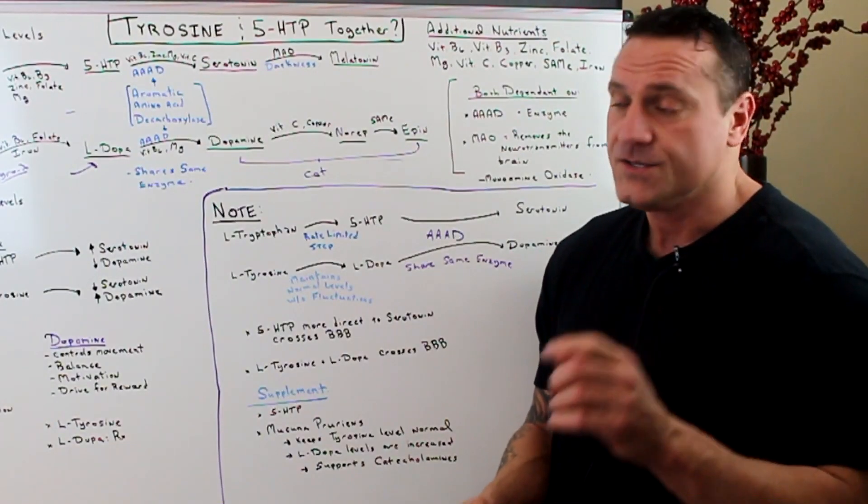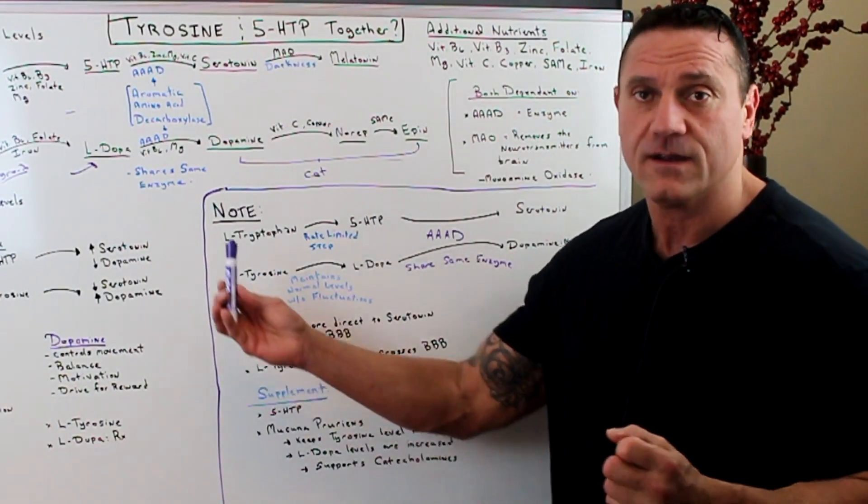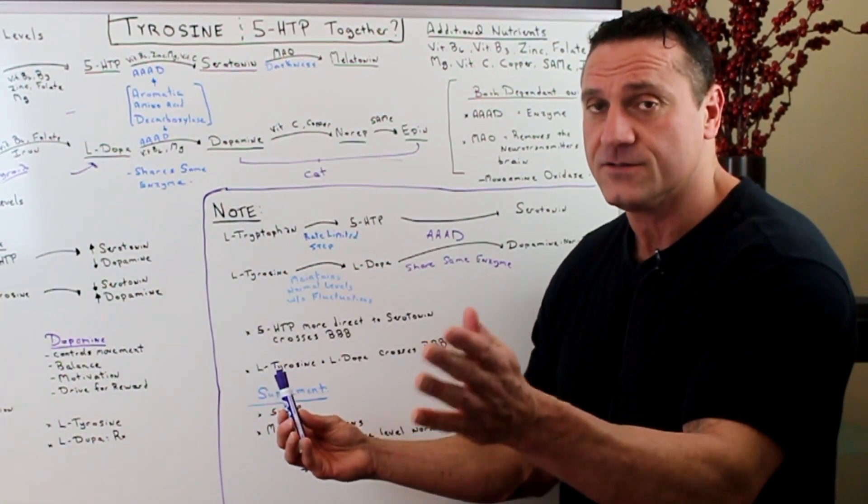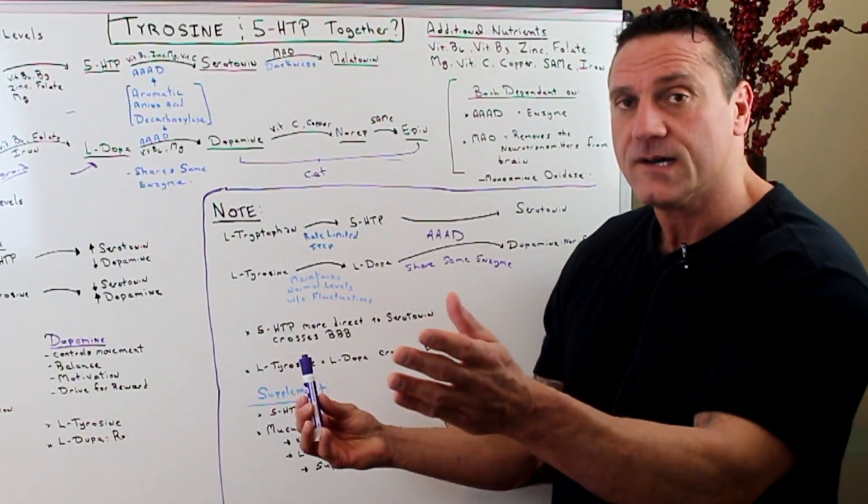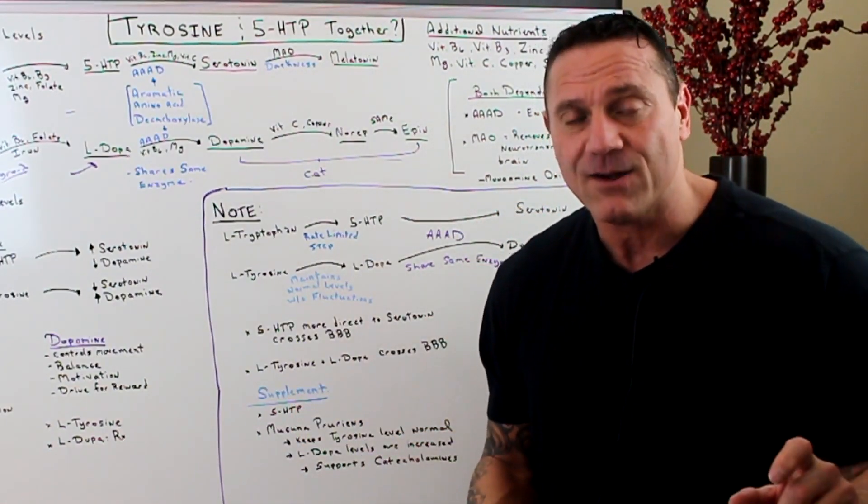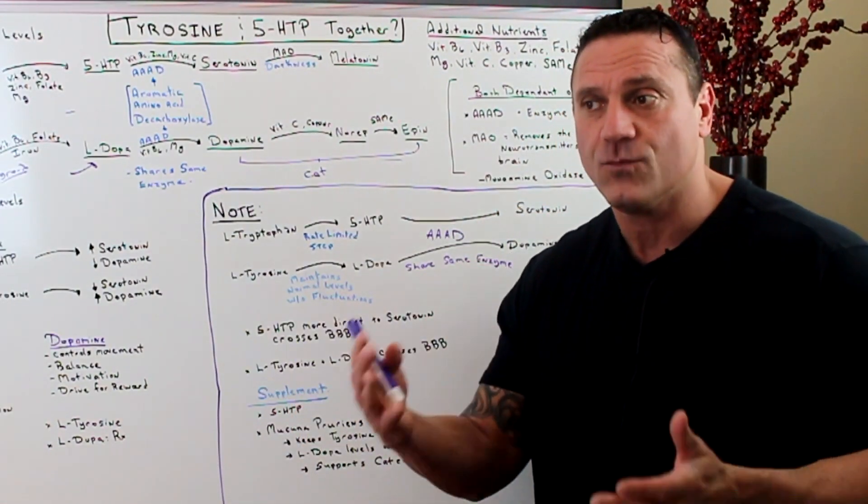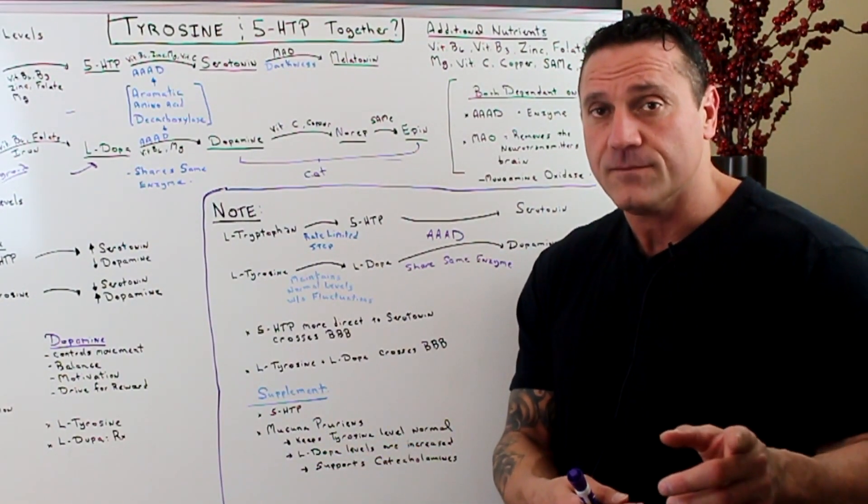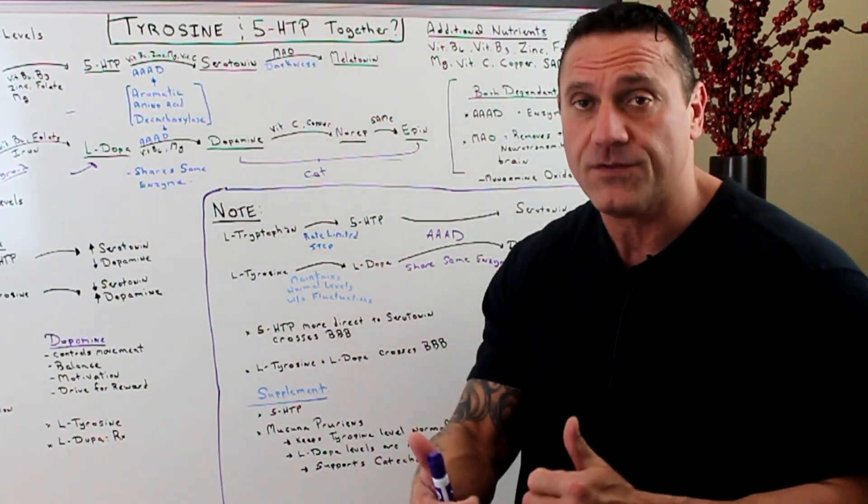So when you're taking in too much tyrosine or L-phenylalanine, thinking that you're going to boost your dopamine levels, yes you will, but also you may affect your thyroid. So the increase of dopamine may actually be thyroid hormone and it's a problem if you have autoimmune, if you have Hashimoto's or hyperthyroid.